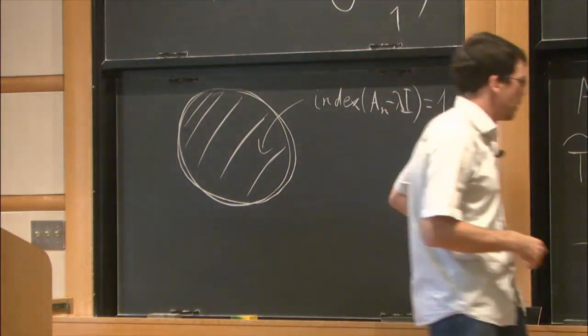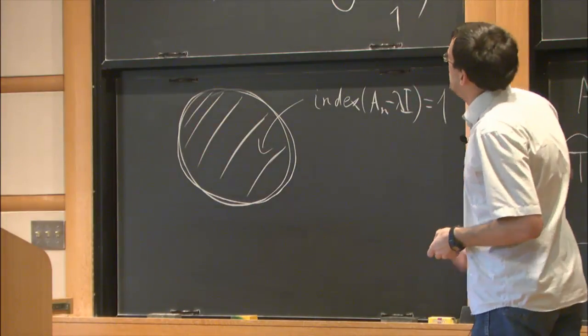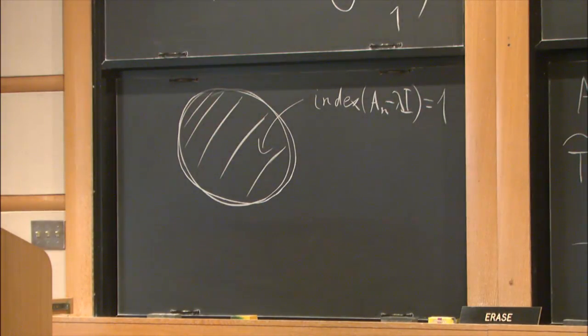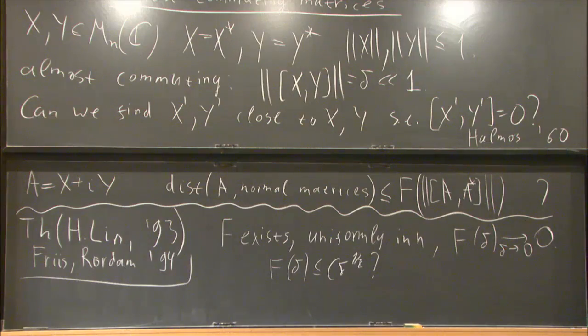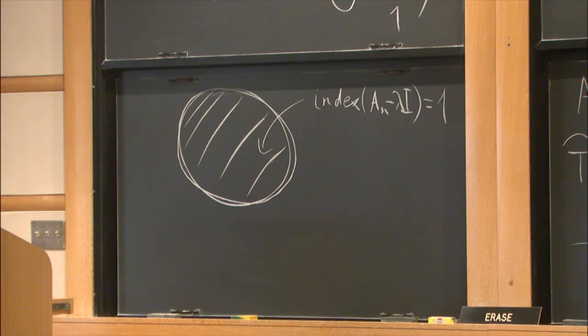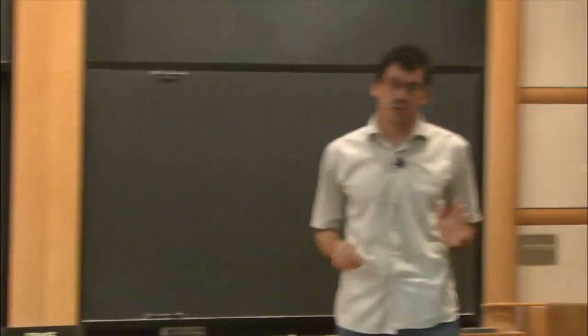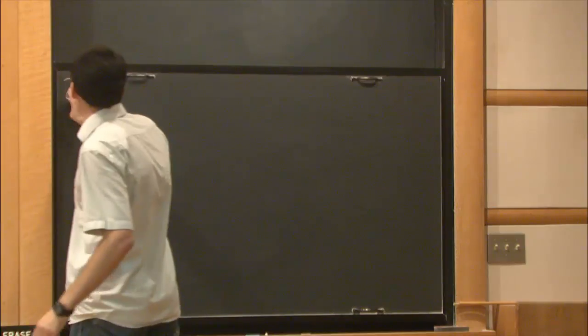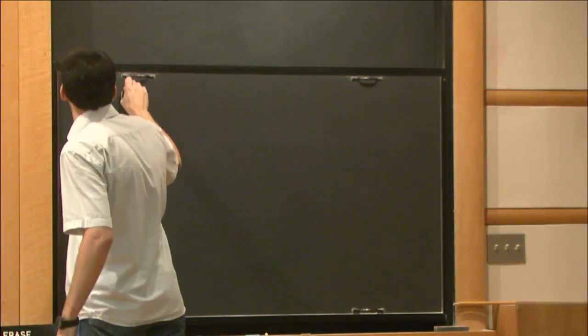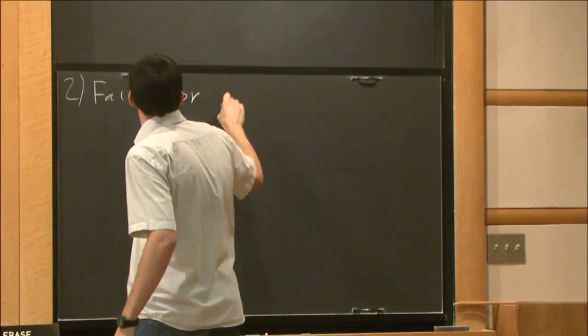Another example is that if you replace self-adjoint matrices by unitary matrices, it also becomes false and there is another topological type obstruction. So it also fails for unitary matrices.